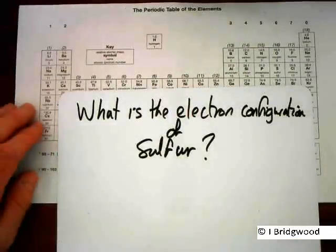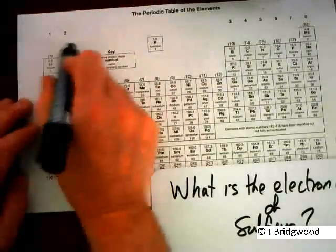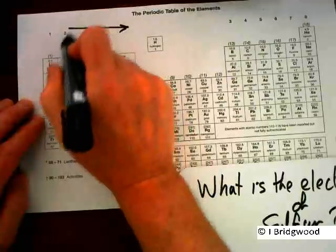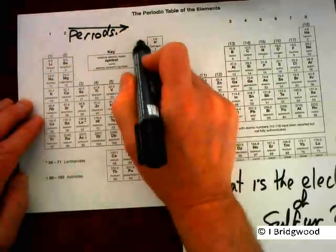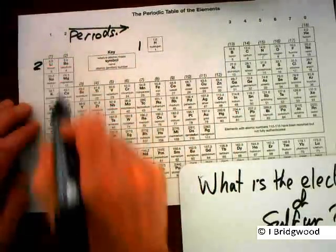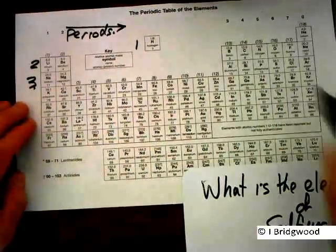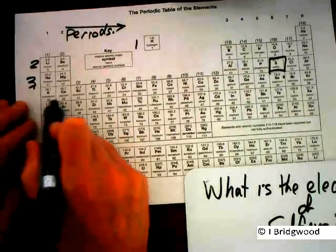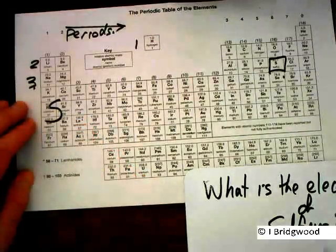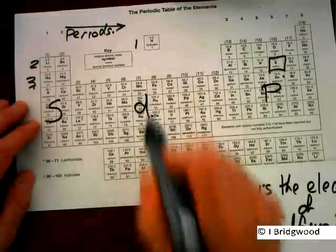Well, remember what we've got here is periods going across the periodic table, and we've got period 1, period 2, period 3. There's sulfur, and we have S block, P block, and D block.